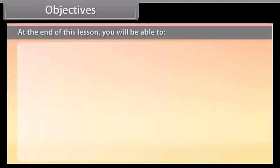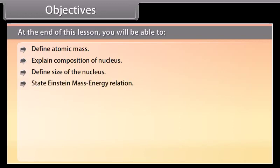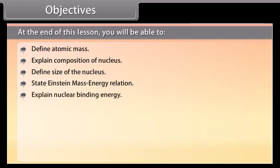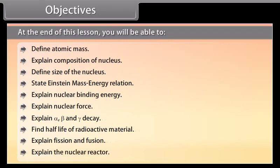Objectives: At the end of this lesson, you will be able to define atomic mass, explain composition of nucleus, define size of the nucleus, state Einstein mass-energy relation, explain nuclear binding energy, explain nuclear force, explain alpha, beta and gamma decay, find half-life of radioactive material, explain fission and fusion, and explain the nuclear reactor.